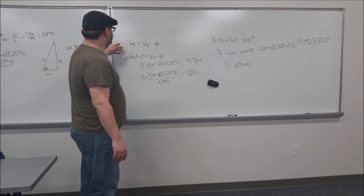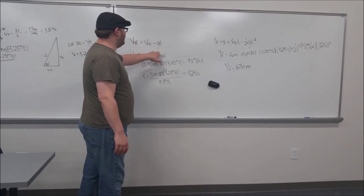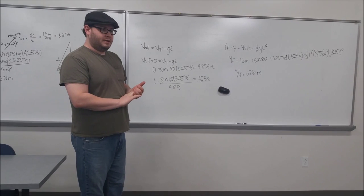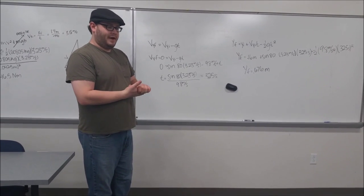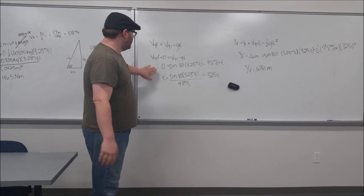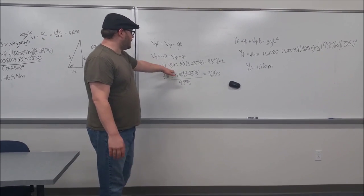We do this by starting with the equation velocity final equals velocity initial minus gravity times time. What we're wanting to know is when the velocity final of the projectile in the y-coordinate equals zero. So we set that value equal to zero.